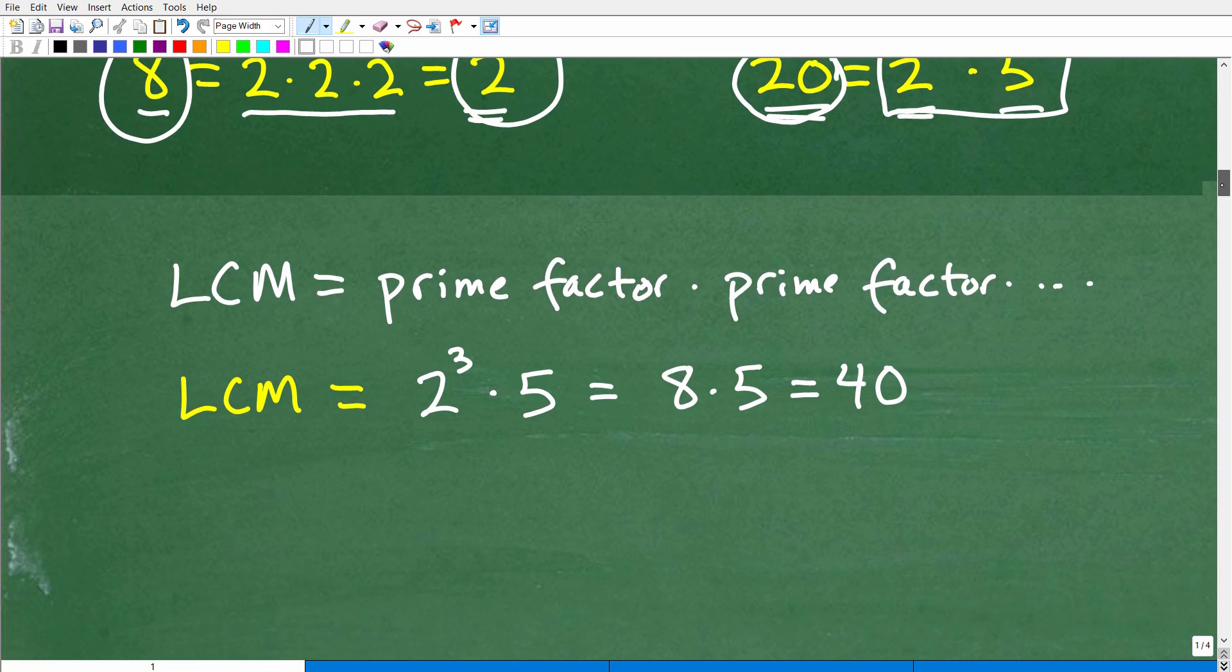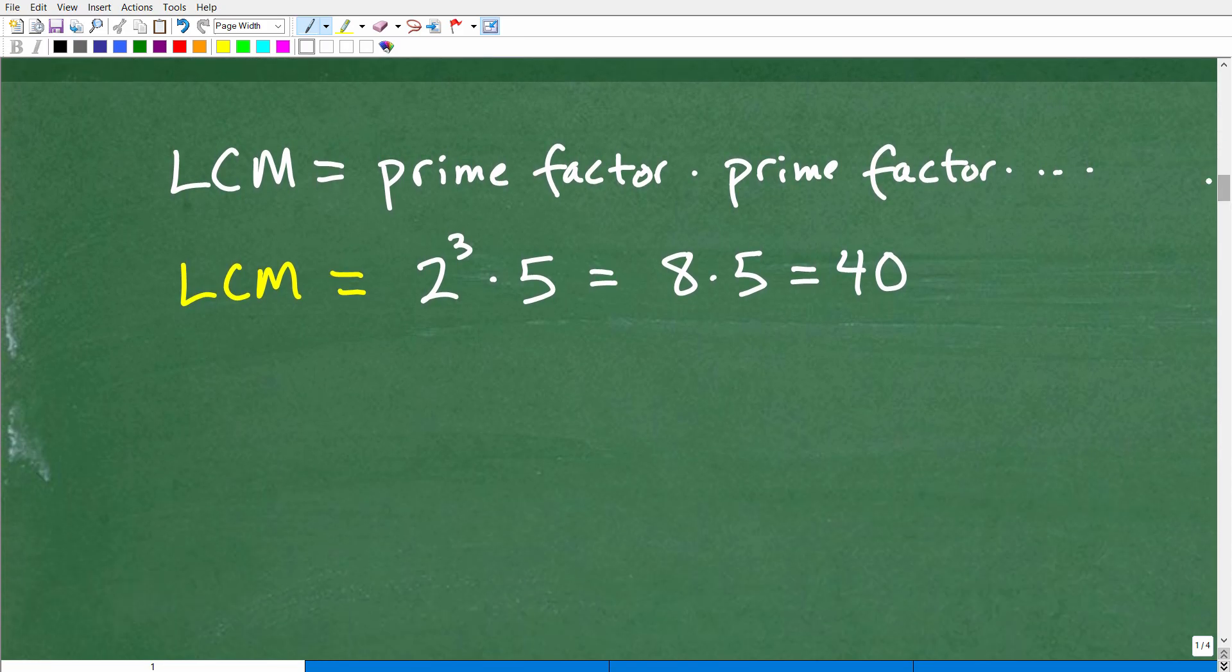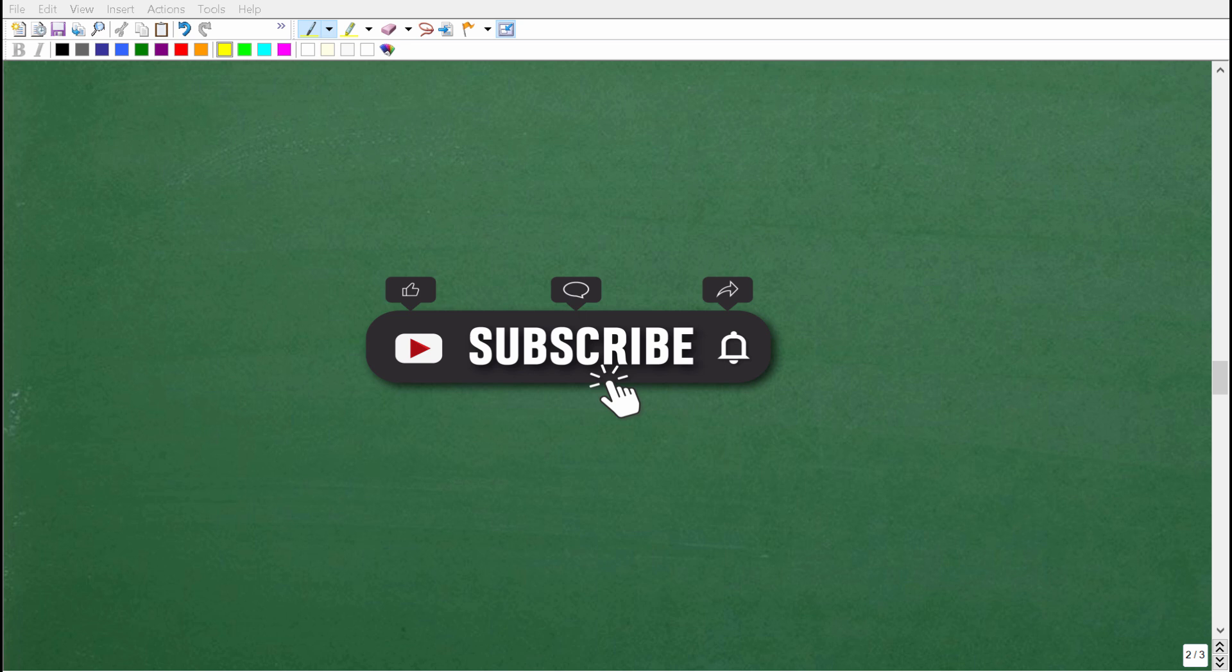So this is really important. We're going to think of 8 as 2 cubed, that's the way we're expressing its prime factors. And 20 we're going to think of as 2 squared times 5. Now let's talk about how to find the LCM. If you're learning something from this video, make sure to subscribe and hit that bell notification. This really does help me out on YouTube. If you need additional help in math, check out my full main math courses. You can find links to those in the description. Let's get back to the problem.